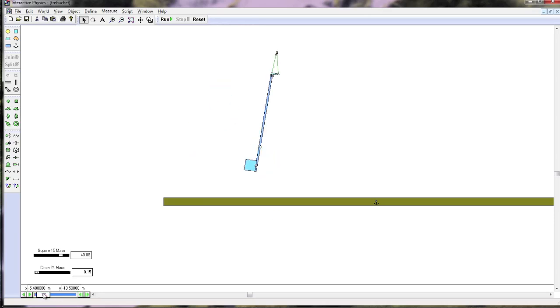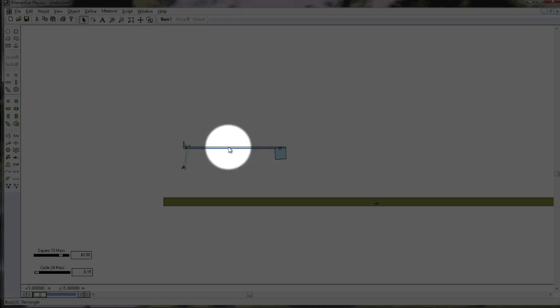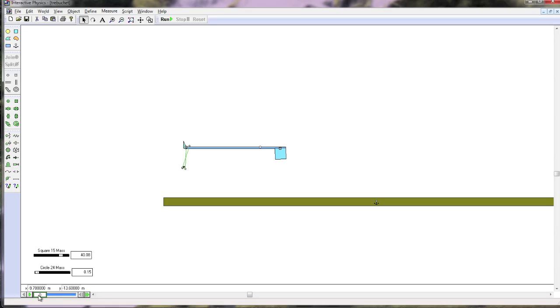As we activate the trebuchet, notice how the far end of the trebuchet, the long end of the lever arm, moves very, very fast. This end moves only a small amount, and that is the speed advantage that the trebuchet gives us. So again, we can see a very small amount of movement of the effort force produces a very big motion on the other end of the trebuchet.